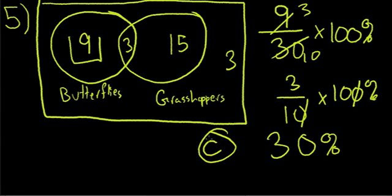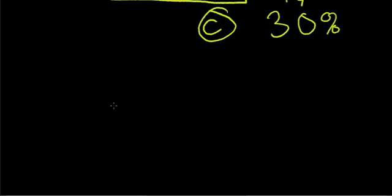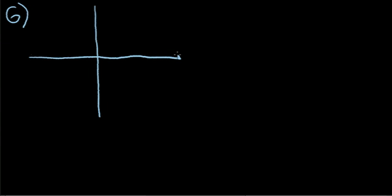Next problem, number six. So there is an xy graph here, and then there's two straight lines, and they're perpendicular from what I can see.